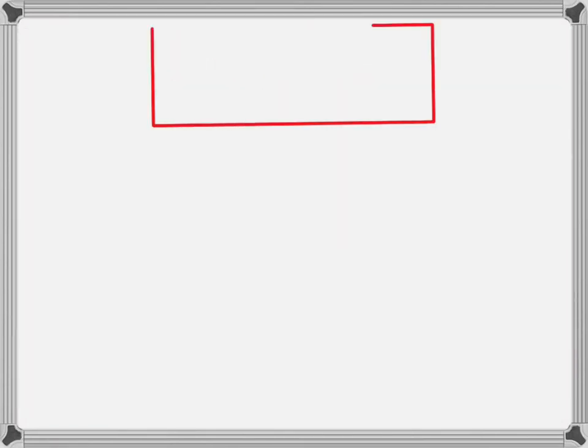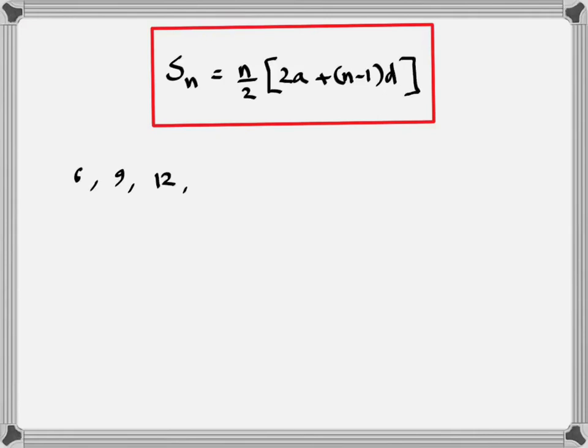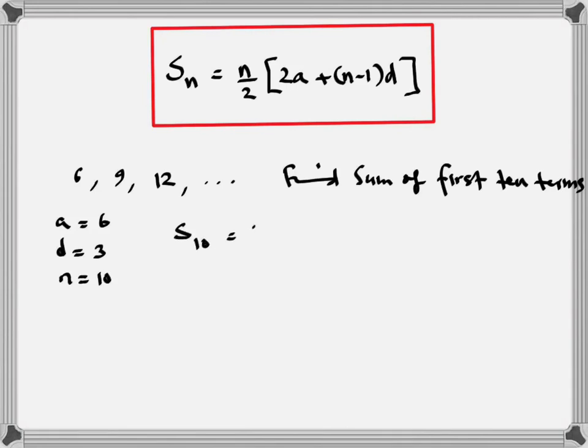The formula itself: Sn equals n divided by 2, times 2A plus N minus 1 multiplied by D. Now, for example, look at the series 6, 9, 12 all the way, and if I ask you find the sum of the first 10 terms. What is the first term? Sorry, the first term is 6. The common difference is 3 and the number of terms is 10. So you would simply apply this formula and you would get a particular value.